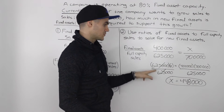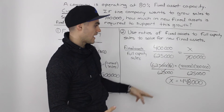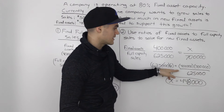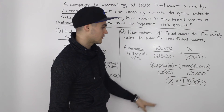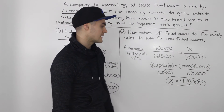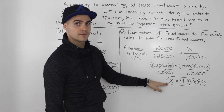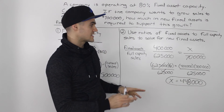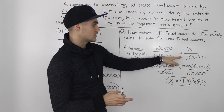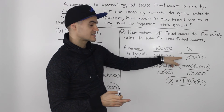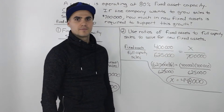Dividing both sides by 625,000 to isolate for X and putting this into a calculator, you would get $448,000. So $448,000 represents the fixed assets we need to support $700,000 worth of sales.